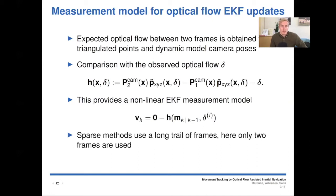And sparse methods usually use a long trail of frames, and here only two frames are used, and the fact that it works is surprising. But this is probably because of the robust optical flow estimate of the FlowNet2.